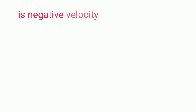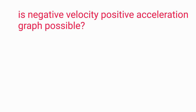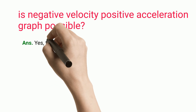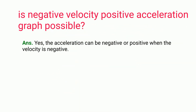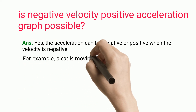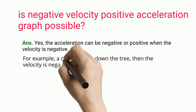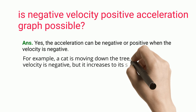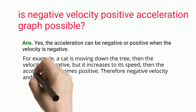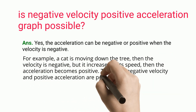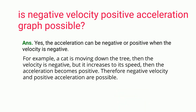Is a negative velocity positive acceleration graph possible? Yes, acceleration can be negative or positive when the velocity is negative. For example, if a cat is moving down a tree, the velocity is negative, but if it increases its speed, the acceleration becomes positive. Therefore negative velocity and positive acceleration are possible.